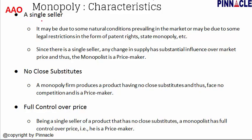The next market form is monopoly. The first feature of monopoly is a single seller. A monopoly market has only one seller selling the product. This may be due to some natural conditions prevailing in the market or due to legal restrictions in the form of patent rights or state monopoly. Since there is a single seller, any change in supply has a substantial influence over market price, and thus the monopolist is a price maker.